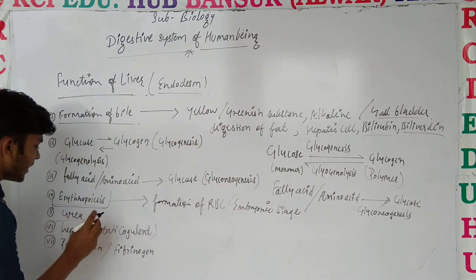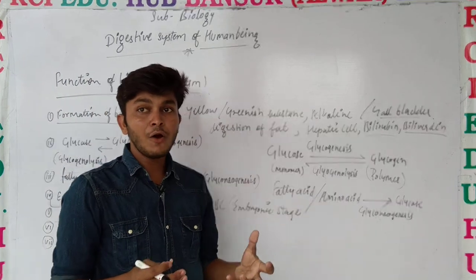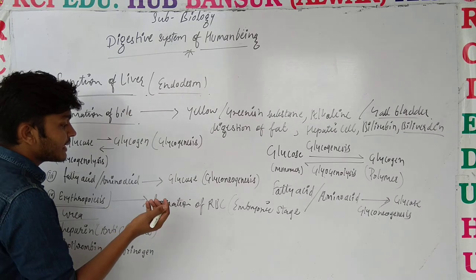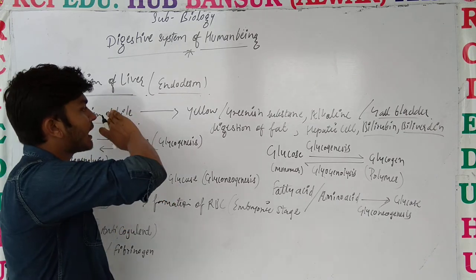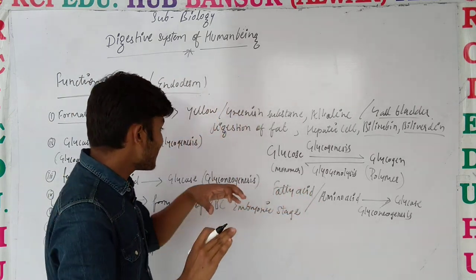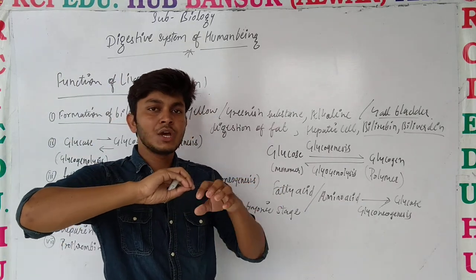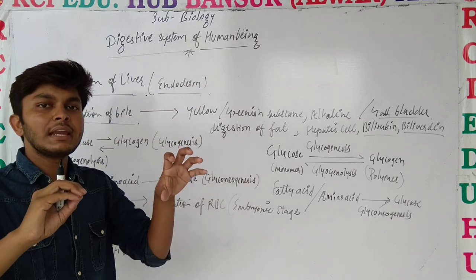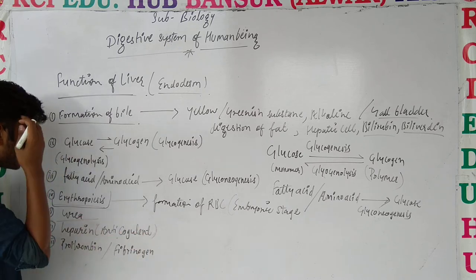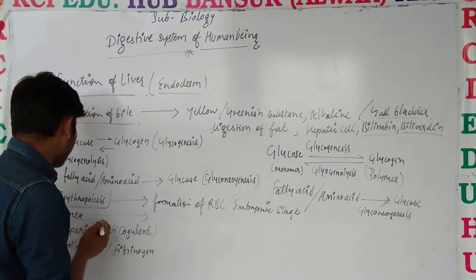इसके बाद बात करते हैं urea की — urea is also formed in the liver. Because all old cells come into the liver; we can say the liver is like a graveyard. जिन भी cells का life span complete हो जाता है — जैसे RBCs — वो liver के अंदर आती हैं और digest हो जाती हैं। उनसे जो proteins और pigments release होते हैं, उससे urea form हो रहा है liver के अंदर।